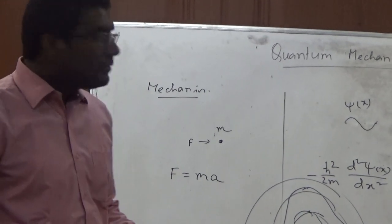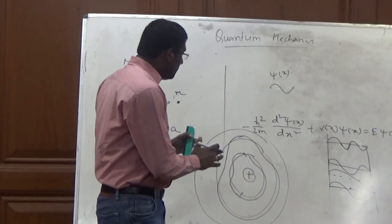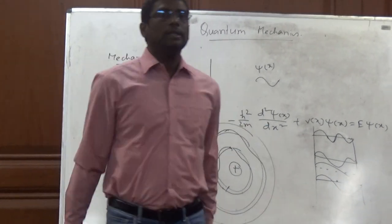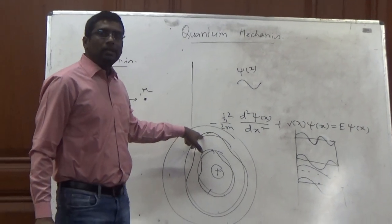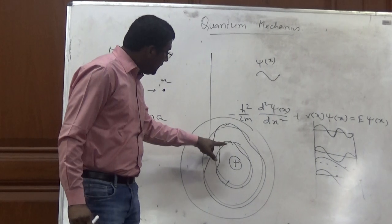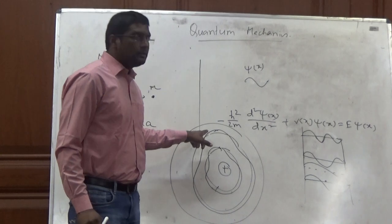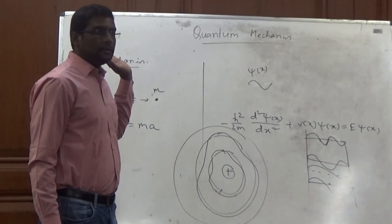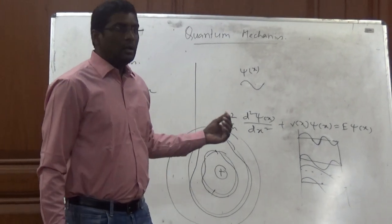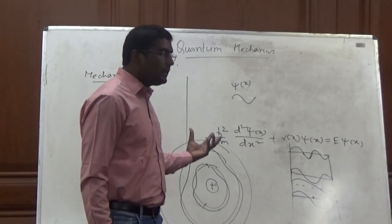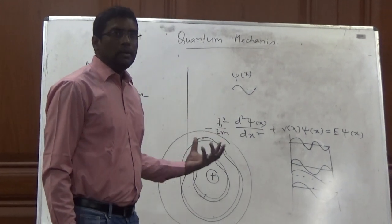This explains why the electron resides only on quantized orbits — because a wave is associated with it. With quantum mechanics, we can explain why the atom is stable and why this universe exists: a wave is associated with the electron, and that is why the electron can reside only on orbits where the associated wave can reside. This is how wave mechanics explains the physics of the subatomic level.